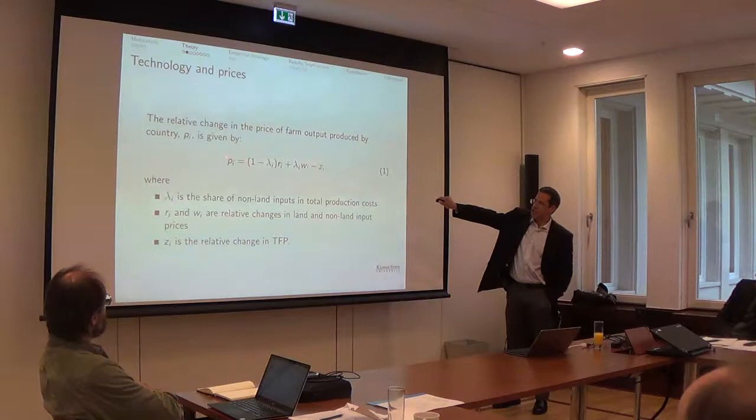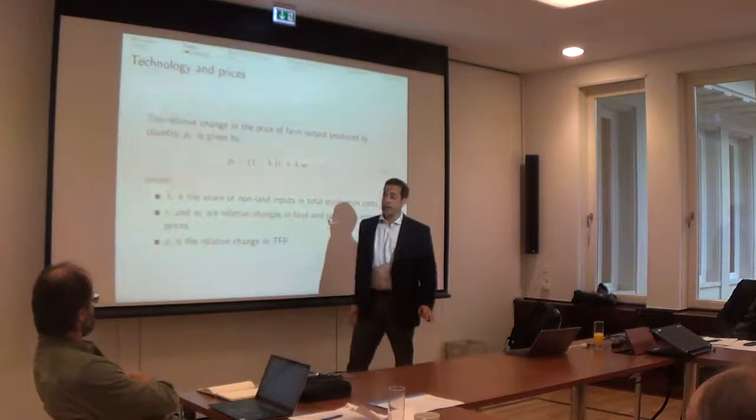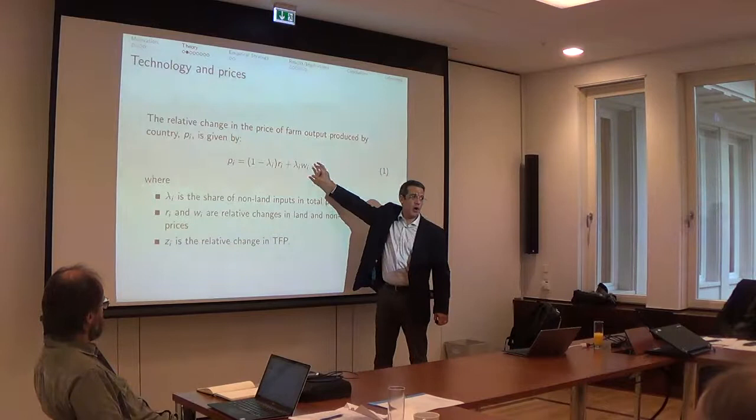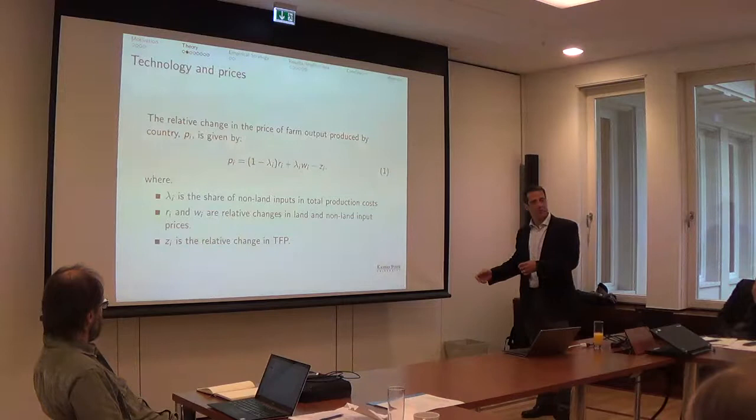We start with this critical relationship. This is the percentage change in the price that country i charges for a given agricultural good. So lowercase are percentage changes. Using profit maximization, we can basically decompose that change in prices in the changes on the land rents and the non-land input prices, weighted by the cost shares in the production function. So that's the idea that an increase in prices should be exhausted by increasing the cost of the inputs that are going to production.